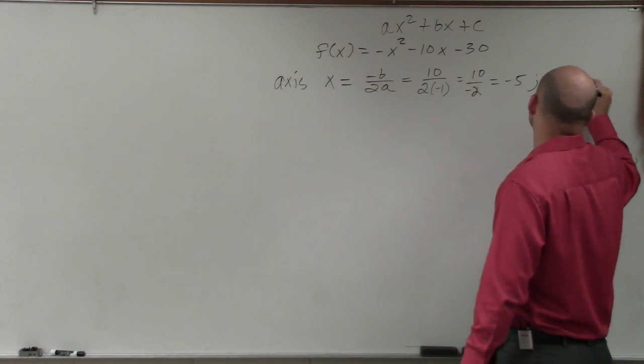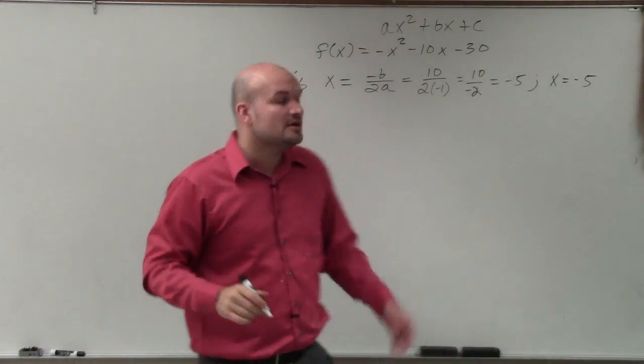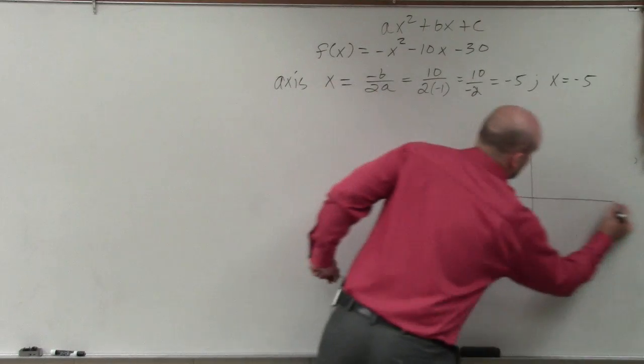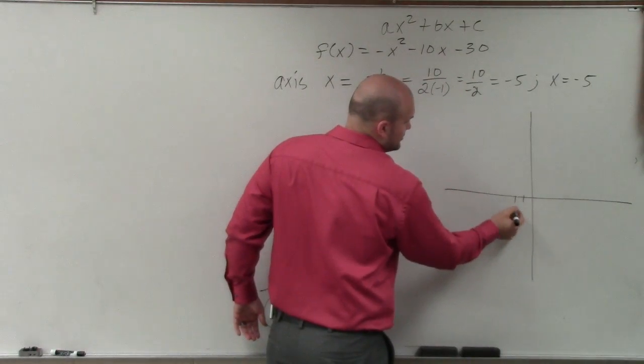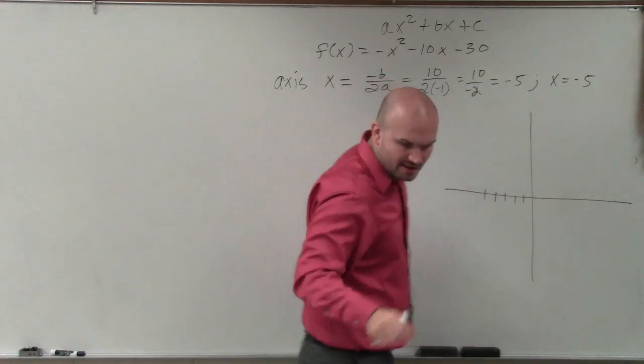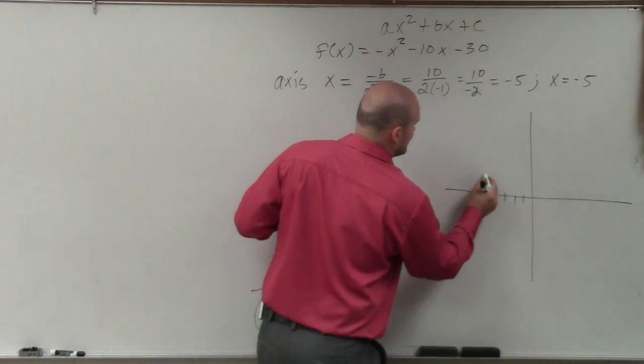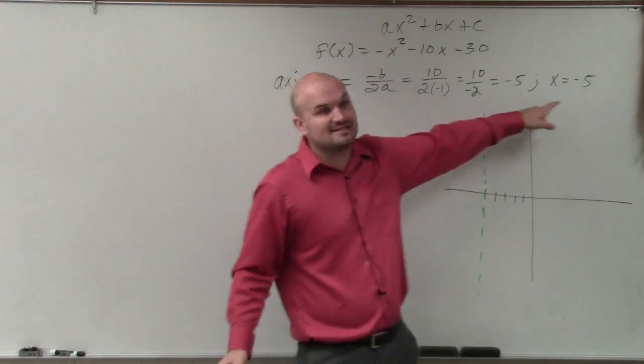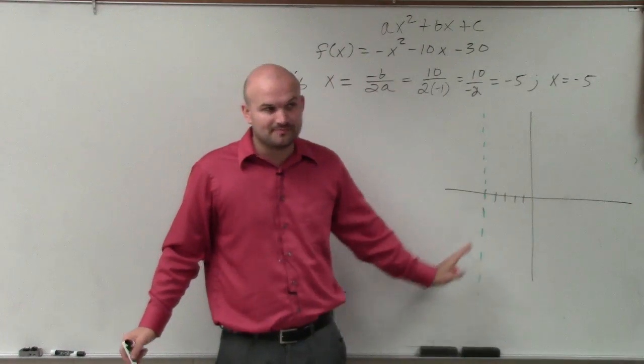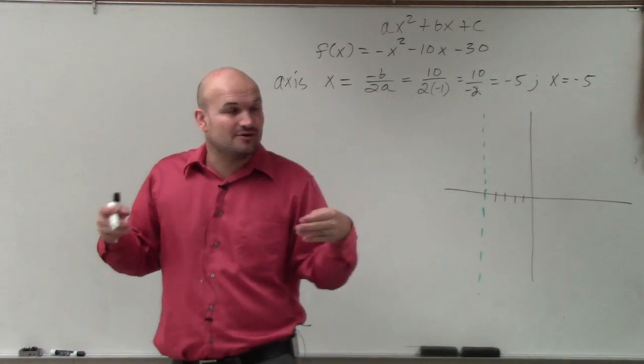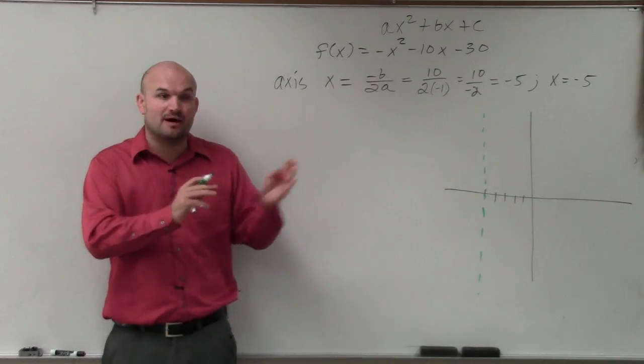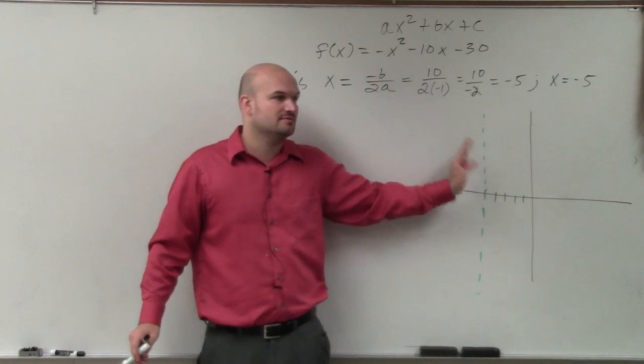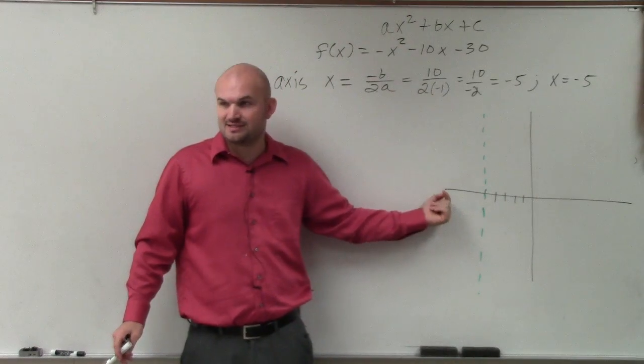Therefore, the axis of symmetry is x equals negative 5. So on your graph, all you simply need to do to graph this is go over to negative 5, and then create a nice little vertical line. Because when we have graphing x equals negative 5, that creates a vertical line. Now remember this axis of symmetry, this is going to be the line that the graph is symmetrical about. Whatever is on the right-hand side of this graph, you can flip it, and you'll get it on the left-hand side.